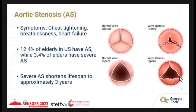Aortic stenosis is basically the calcification or calcium buildup on the aortic valve. This is an example of a normal person versus a person who has aortic stenosis — there's a lot more calcium buildup, making it much harder to push blood through the heart. Common symptoms are chest tightening and breathlessness, with severe symptoms including heart failure. In the western hemisphere, it affects 12.4% of people above age 65, while 3.4% of elders have severe aortic stenosis. Once diagnosed with severe aortic stenosis, patients typically have a lifespan of approximately three years.